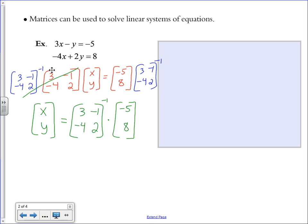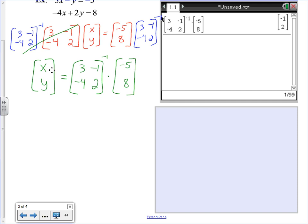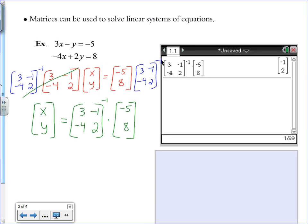So under this gray box, which I'm now going to slide out of the way, I've shown you on the calculator what it's going to look like when you type it in. So that's what it's going to look like. We have a 3, negative 4, negative 1, 2 matrix with the inverse negative 1 notation, and you can type that in as if it was an exponent, multiplied by negative 5 and 8 in a matrix.